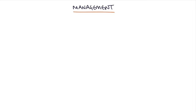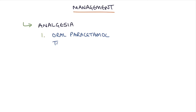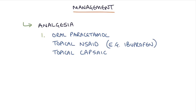We can use a stepwise approach to analgesia to help control symptoms. First line would be oral paracetamol and a topical non-steroidal anti-inflammatory like topical ibuprofen or topical diclofenac. You can also use topical capsaicin, which is chili pepper extract that causes warmth around the joint and helps improve symptoms.